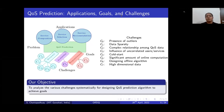To achieve high accuracy, we need to address five challenges. The first is the presence of outliers — if the dataset contains outliers, we need to detect them, and if possible, we should have a mechanism to predict the outlier.